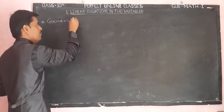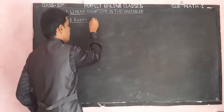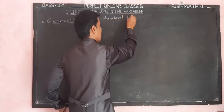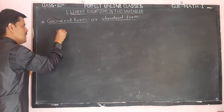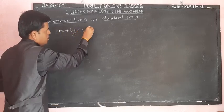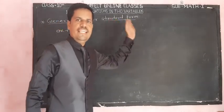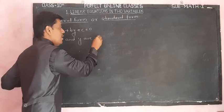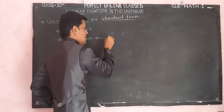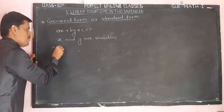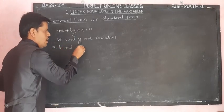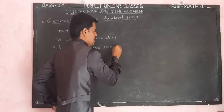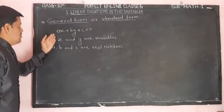The standard form, also called the general form, of a linear equation in two variables is: ax + by + c = 0. Here x and y are variables, and a, b, and c are real numbers — they are not variables, they are real numbers.